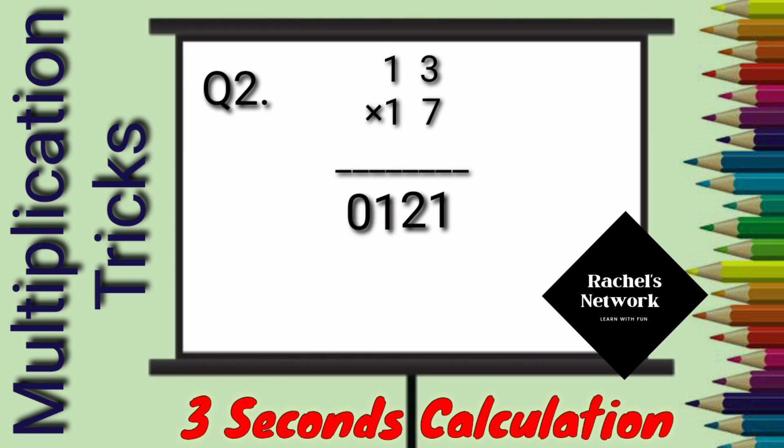Third step is to cross multiply and add the answers. That is, 1 x 7 is 7 and 1 x 3 is 3. So, adding 7 plus 3 will give us 10. So, leave the first position. Write number 10 over here.